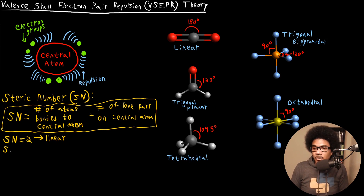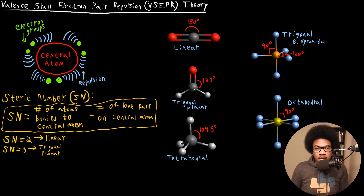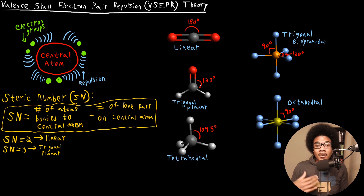Moving on to a higher steric number — steric number of three. If you have a steric number of three, the geometry is going to be trigonal planar. This is an example of a trigonal planar geometry — this is CH2O. These electron groups are going to orient themselves such that the bonds are 120 degrees apart, minimizing the electron repulsion.